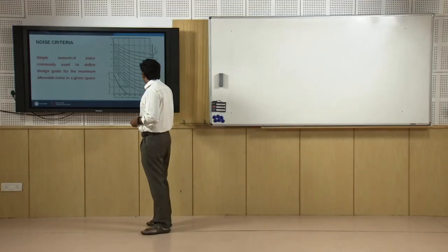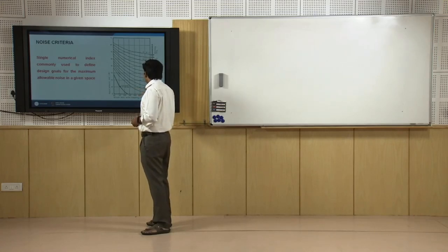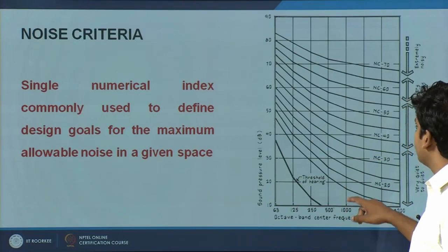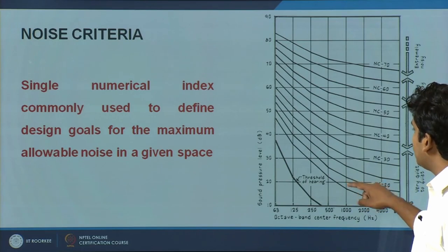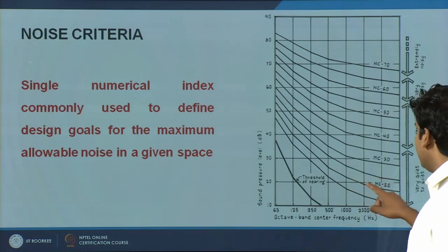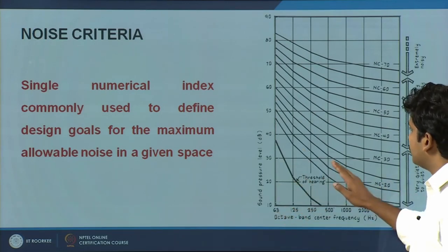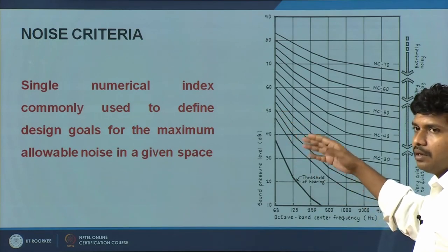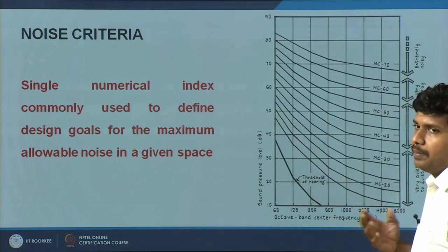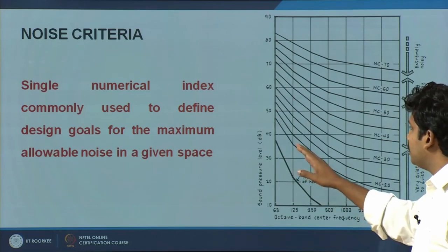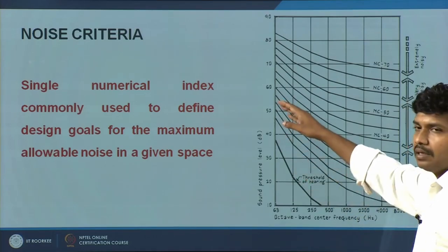For example, if you take a particular noise criteria of NC 20, you will find at the center frequency of 1000 Hz a value close to 20 decibels. As frequency goes up, the value reduces, and as it goes down to lower frequencies, the value goes up. This is more or less similar to the audibility capacity of the human ear — at lower frequencies, more sound pressure levels are allowed.